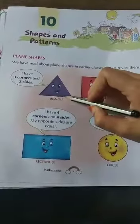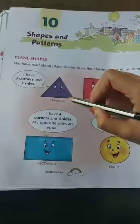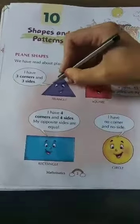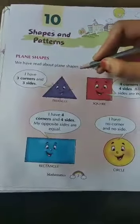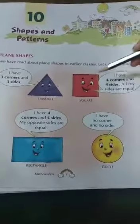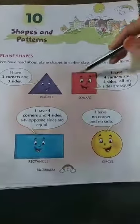Now see here — this is a triangle. A triangle has three corners: one, two, three, and three sides: one, two, three.